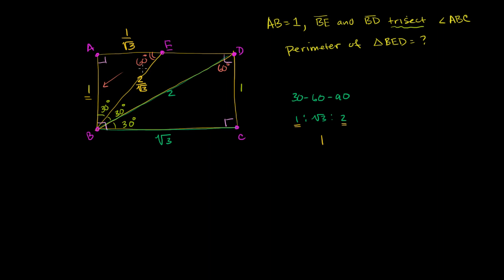We're doing well. We've figured out that one side of triangle BED is 2, another is 2/√3. All we need is ED. We know the entire base AD equals BC, which is √3. If AE is 1/√3, then ED equals √3 minus 1/√3. That's the total base length minus the AE portion.